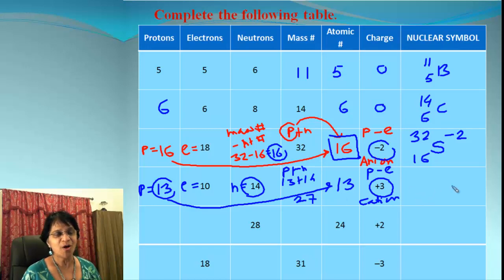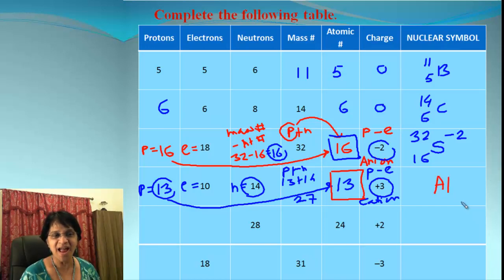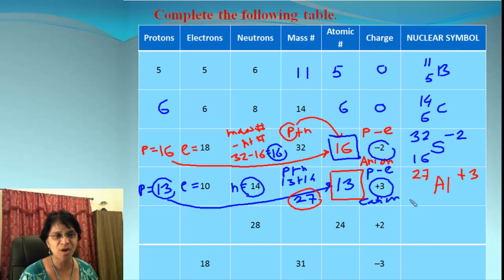To find the element, we locate atomic number 13 in the periodic table — that is aluminum. The charge is positive 3, so that goes in the right-hand side top corner. Mass number is 27 and atomic number is 13. That is the nuclear symbol for the aluminum ion.